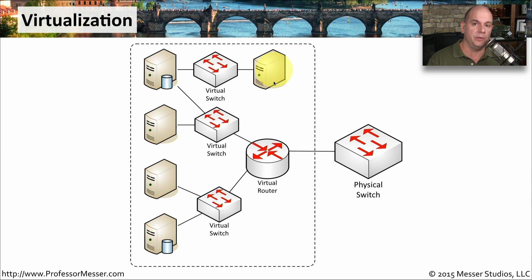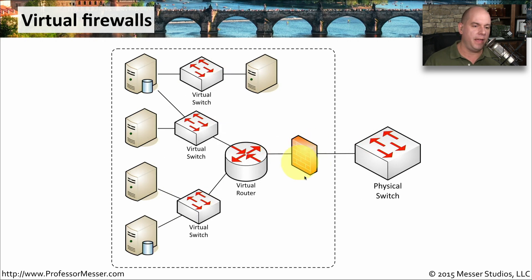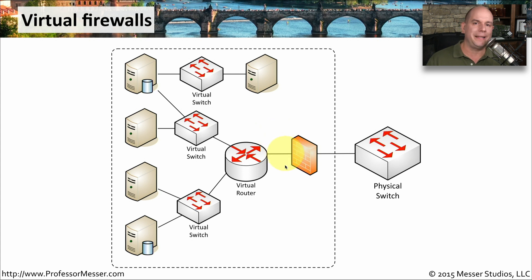Since we're talking about virtualization and how it applies to networking, let's apply some security into this mix. We have virtual switches and virtual routers, so it makes sense that you would also have a virtual firewall — running the same software with many of the same capabilities as a physical device, but inside the virtual environment. In this case, we place the virtual firewall at the ingress and egress point to the physical world. Everything inside the virtual environment can communicate without a firewall in between, but traffic leaving the virtual world passes through the firewall to be examined and allowed or denied.